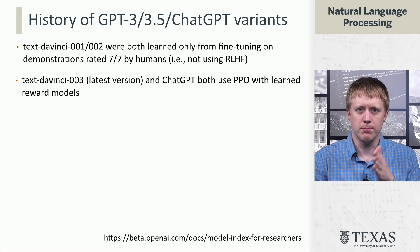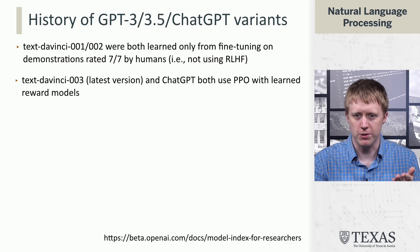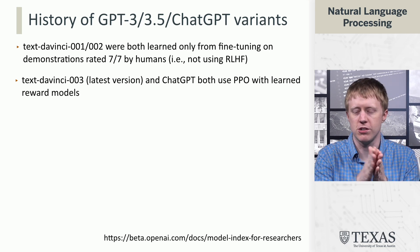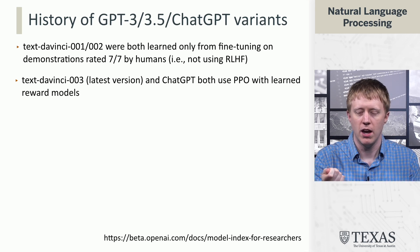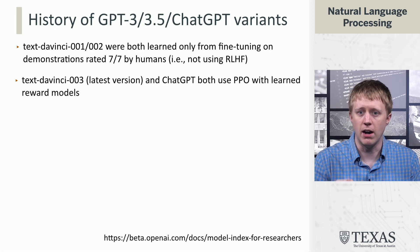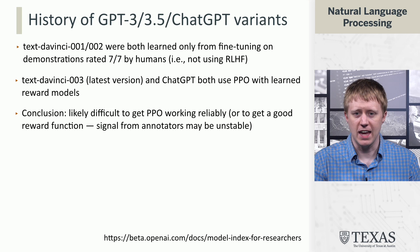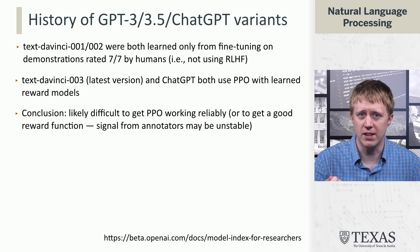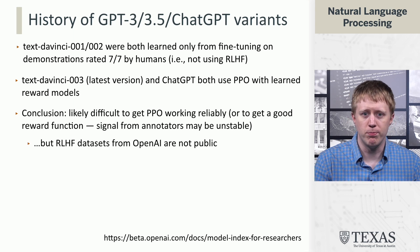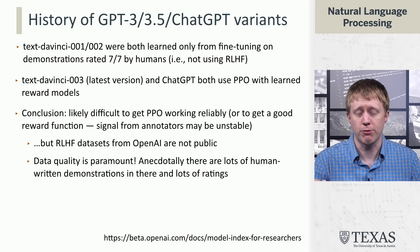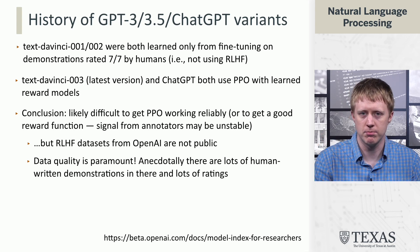The earliest GPT-3++ or GPT-3.5 models were actually using something like instruction tuning — getting completions from the model and training on those that a human rated with the highest score. Text DaVinci 003, which came out shortly before ChatGPT, was actually using RL with PPO. This suggests that RL with human feedback, though it had been around for a while, is a little bit difficult to get working reliably. The data that OpenAI has is not public, and the quality of data from human annotators is really important — having good quality human-written demonstrations and good quality ratings seems key for this process.